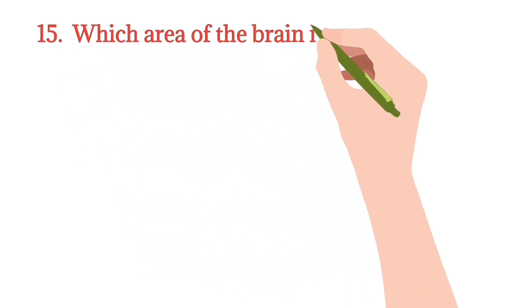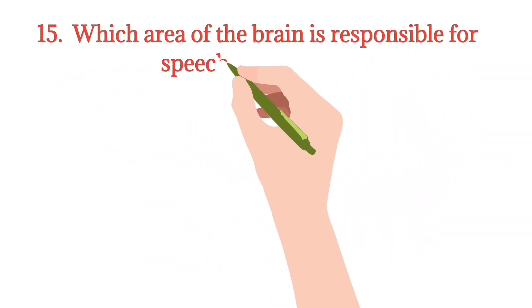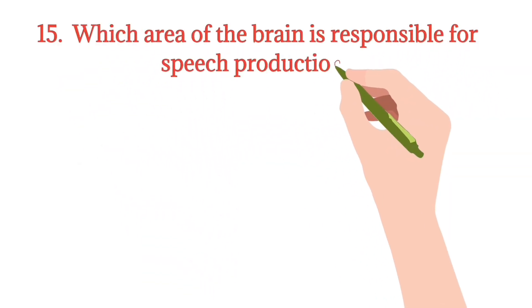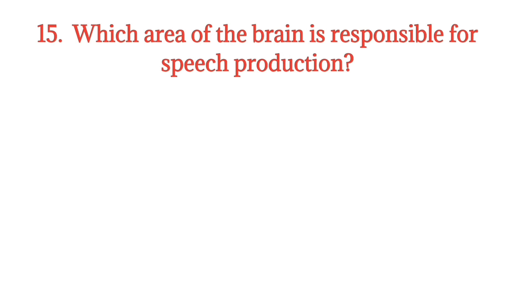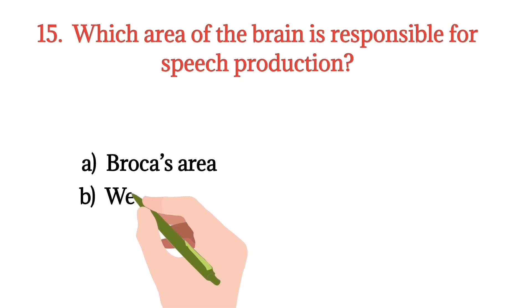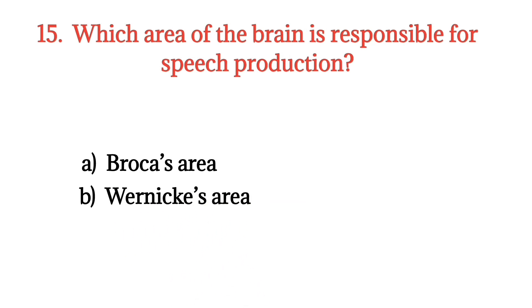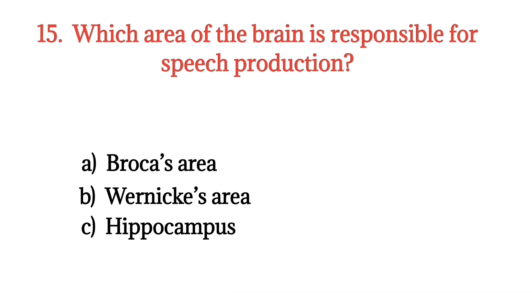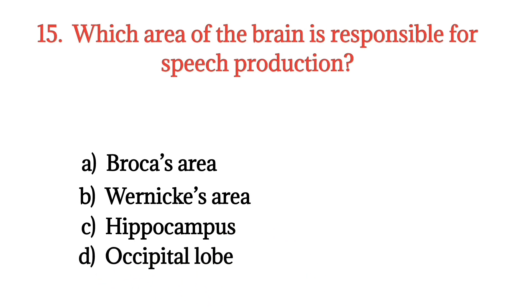MCQ number 15. Which area of the brain is responsible for speech production? Option A: Broca's area. Option B: Wernicke's area. Option C: Hippocampus. Option D: Occipital lobe. The right option is Option A.